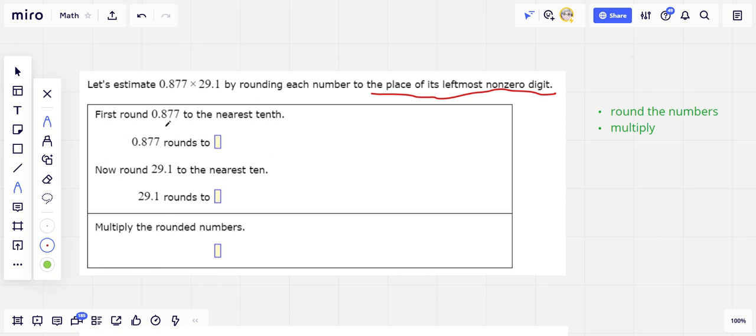the number that's in the highest place value, the number that's most to the left. So we want to round to the nearest tenth for 0.877, and we want to round to the nearest 10 for 29, because this is the tenth place.